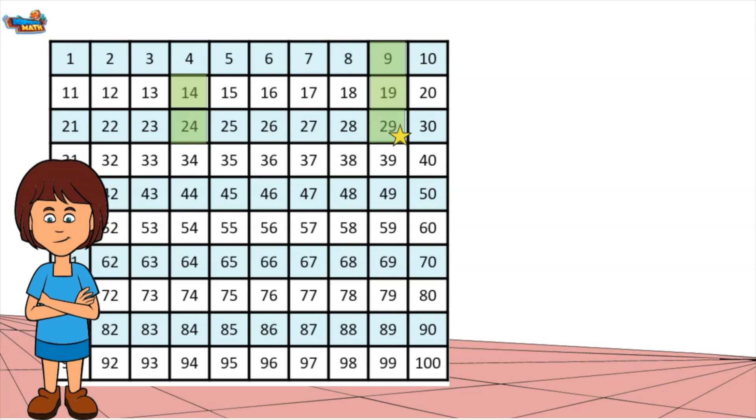Here is a number grid. The green squares represent the pattern being created. A pattern follows a rule. The rule tells us what to do to find the next value in the pattern.